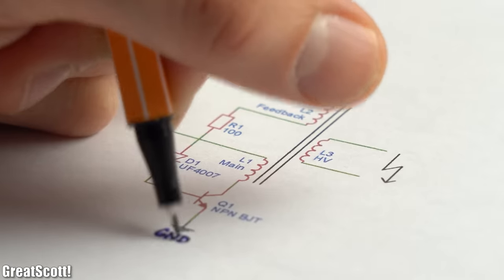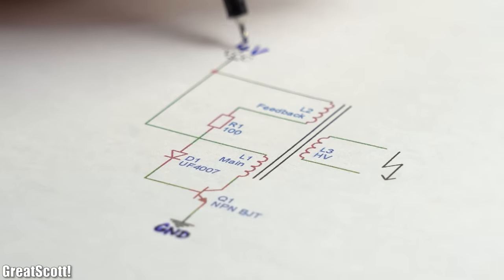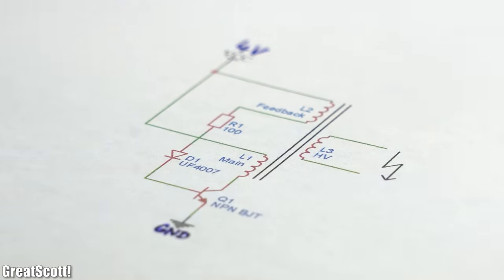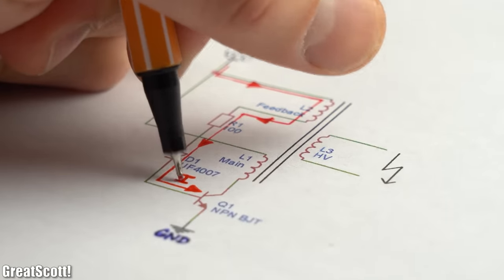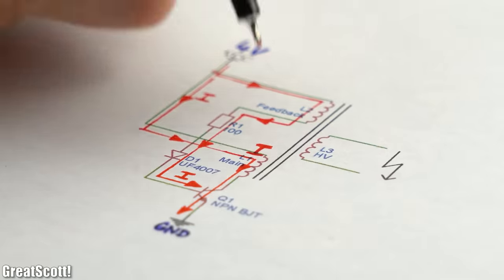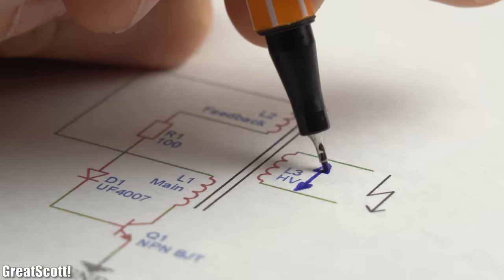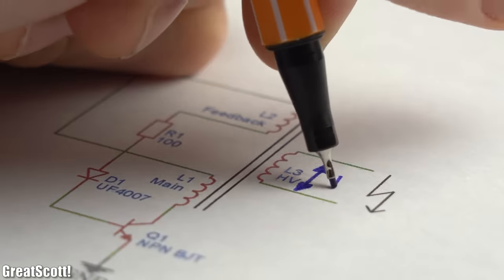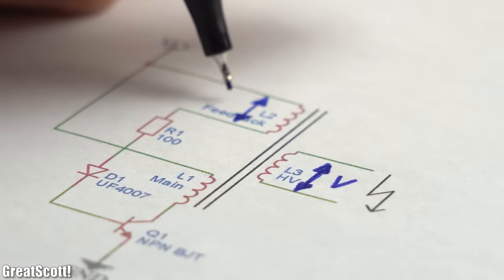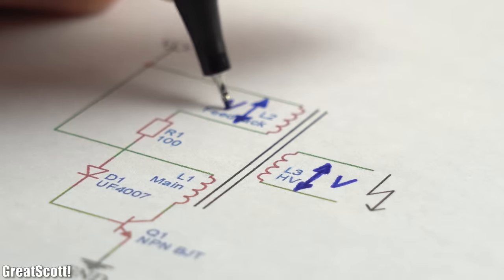The reason is the way this circuit works which as soon as voltage gets applied lets current flow through the feedback coil into the base of the transistor and thus lets current flow through the main primary coil. This not only induces a voltage into the secondary but also in the feedback coil which opposes the input voltage.